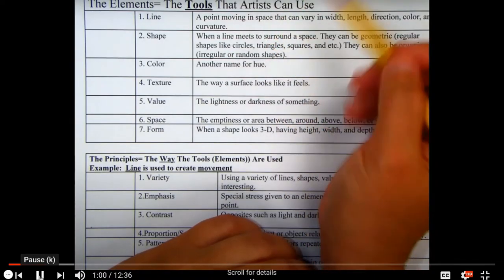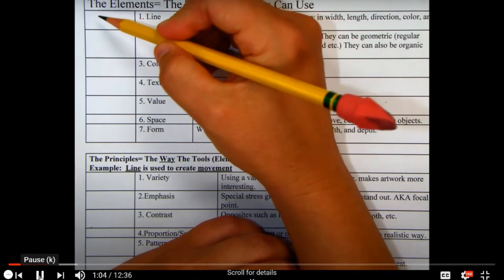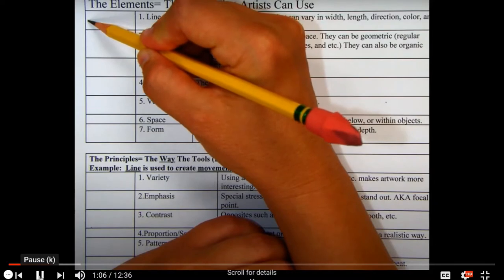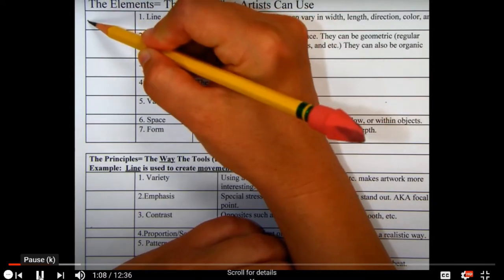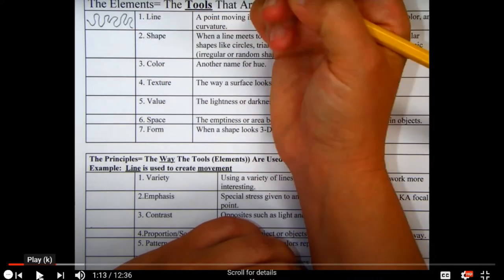Line is basically just a point moving in space. It can vary in width, length, direction, color, or curvature. Línea es un punto que se mueve en el espacio y que varía en grosor, longitud, dirección, color, y curvatura. When you put the pencil on the page, it has to move in order to create that line. Hagan este dibujo para que lo relacionen.